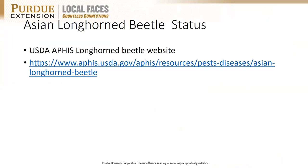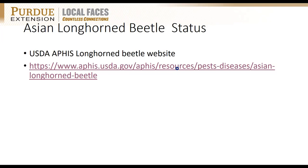We had questions about the general status of Asian longhorn beetle. APHIS has a great website — Google 'USDA APHIS Asian longhorn beetle' and it will come up with lots of information about the current status and latest news. In October 2019 they declared New York City free of Asian longhorn beetle.